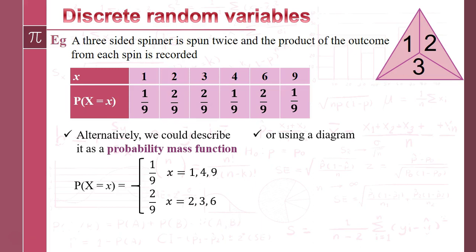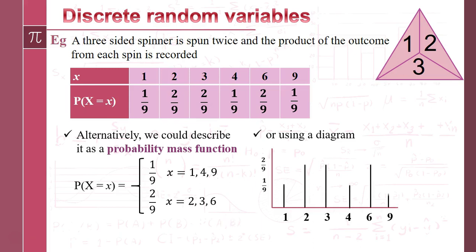The third way is as a simple diagram — almost like a bar graph of the probabilities. So you've got three ways of describing pretty much the same thing. The one you tend to see most are the tables, and doing a lot of work with filling out these kind of tables or algebraic descriptions.